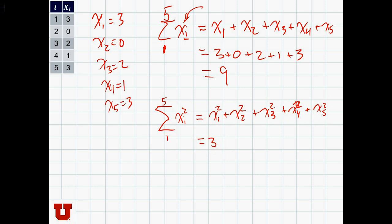So now we are going to be adding up 3 squared plus 0 squared plus 2 squared plus 1 squared plus 3 squared. 9, 4, 1, and 9. So 18 and 5 equals 23.